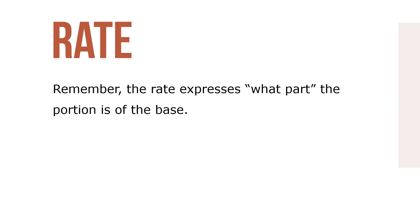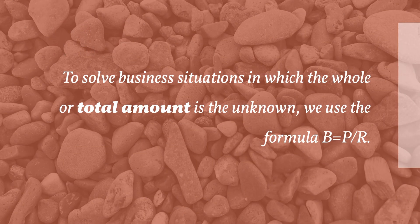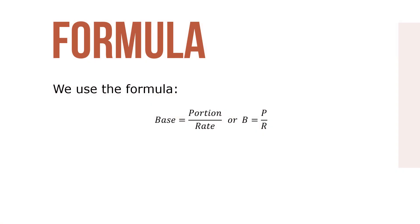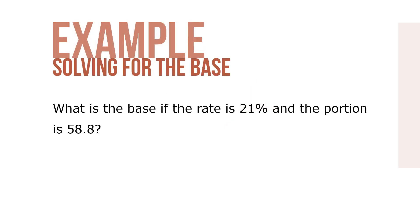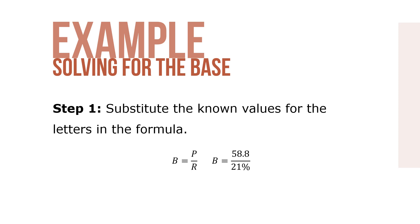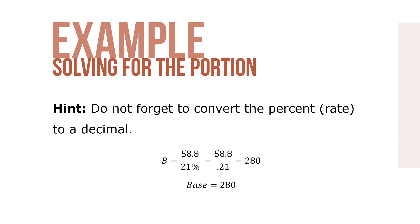To solve business situations in which the whole or total amount is unknown, we use the formula B = P ÷ R. Using the magic triangle, base equals portion over rate. Here's an example: What is the base if the rate is 21% and the portion is 58.8? Step 1: Substitute the known values — B = 58.8 ÷ 21%. Don't forget to convert the percent to a decimal, so B = 58.8 ÷ 0.21, which equals 280 for our base.